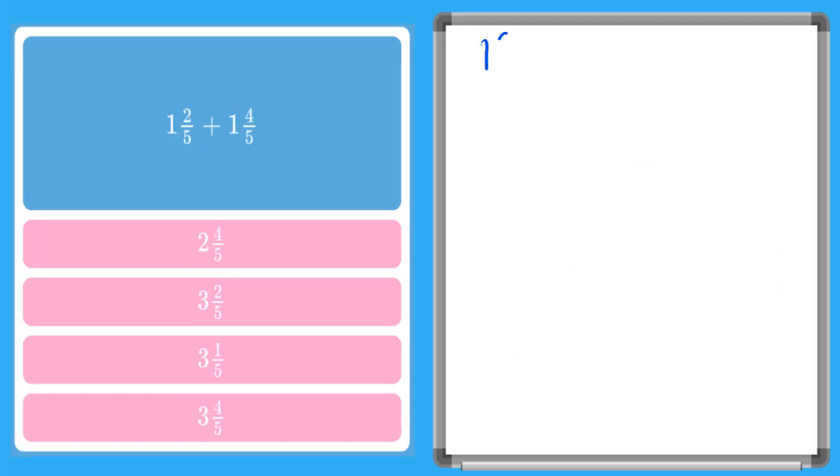So now I have two mixed numbers, 1 and 2/5 plus 1 and 4/5. So let's rewrite this. Notice I'm expanding out my mixed numbers as 1 plus a fraction plus a whole number plus a fraction.